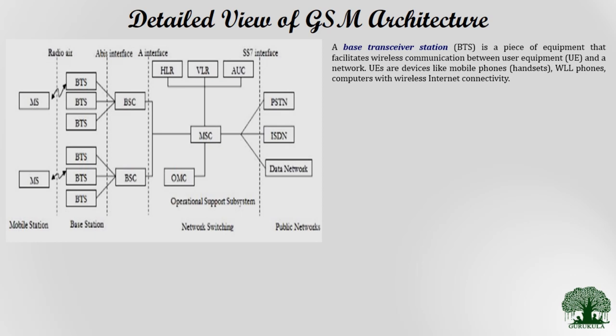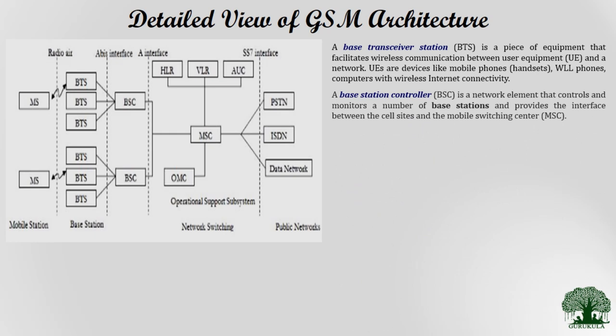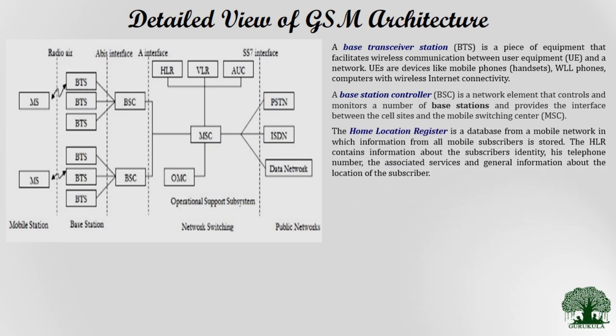There are several BTS units responsible for covering one particular cell. Signals collected from every BTS are combined and forwarded to the BSC — base station controller — which receives signals from multiple BTS units, monitors those base stations, and provides the interface between the cell sites and the mobile switching center.